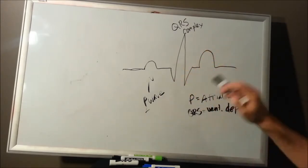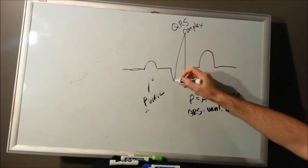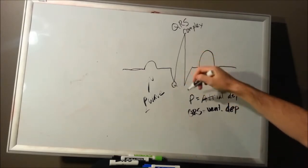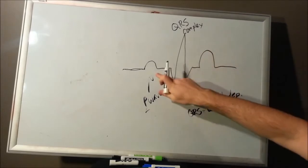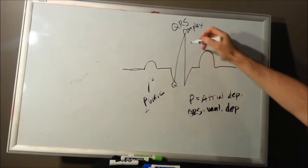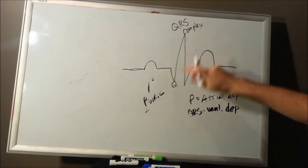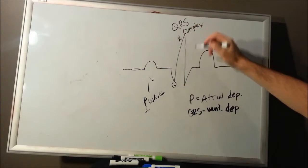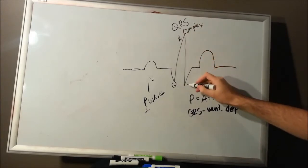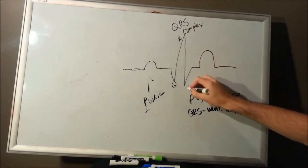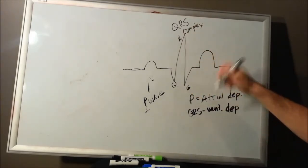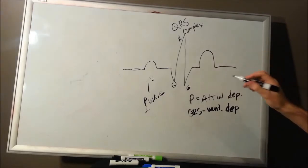Within the QRS complex, the first downward deflection after your P wave is a Q wave. The first positive deflection is an R wave. And the second downward deflection is the S wave.